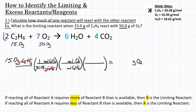Now we want to get rid of moles of C2H6 and turn that into moles of O2. For this conversion factor we need our coefficients, or mole ratios. In the balanced chemical equation, the coefficient in front of C2H6 is 2 and the coefficient in front of O2 is 7, so it's a 2-to-7 ratio: 2 goes in front of moles of C2H6 on the bottom, and 7 goes in front of moles of O2 on top. For our last step, we convert moles of O2 into grams of O2 using the molar mass of O2, which is 32.00 grams per mole — 32.00 grams on top, 1 mole on the bottom.